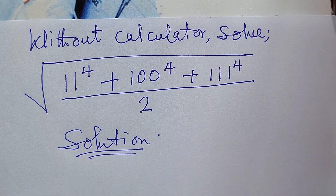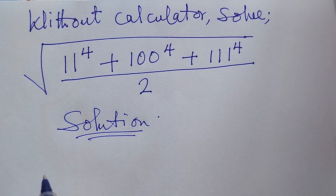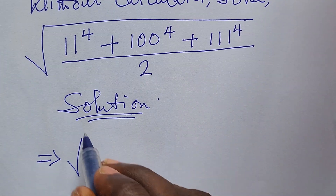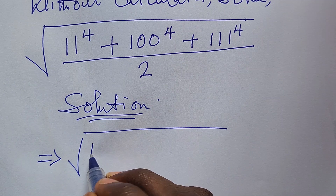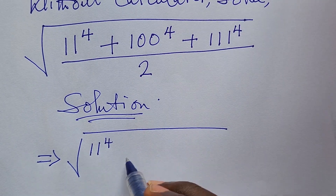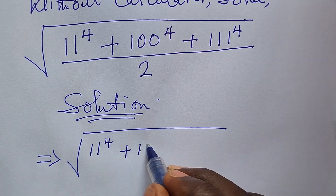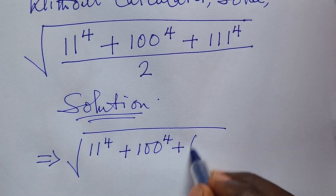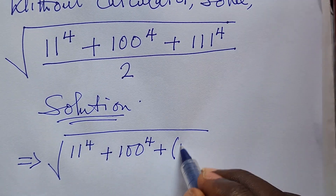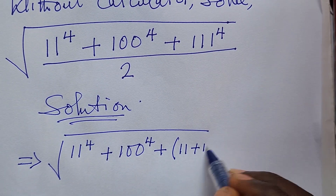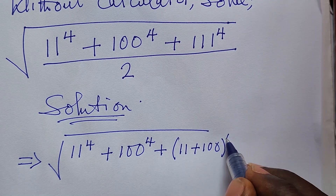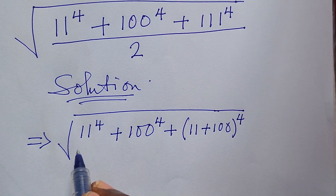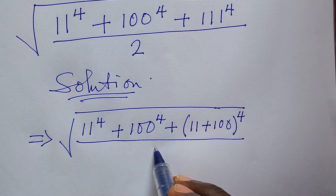Let's go ahead and rewrite this expression. The square root sign is now implied over: 11 to the power of 4, plus 100 to the power of 4, plus — in brackets — (11 plus 100) all to the power of 4. Everything all over 2.